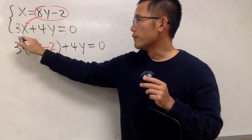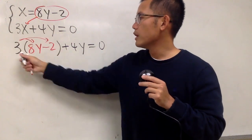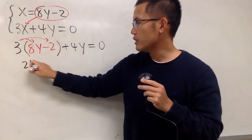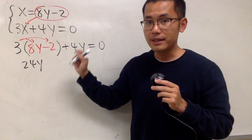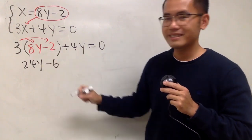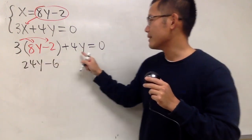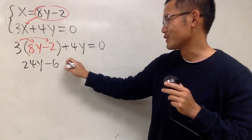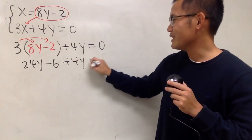From here, we can solve for y. Of course, go ahead and distribute. 3 times 8y, that's 24y. 3 times minus 2, that would be negative 6. And then, we continue, just write down plus 4y. That's equal to 0.